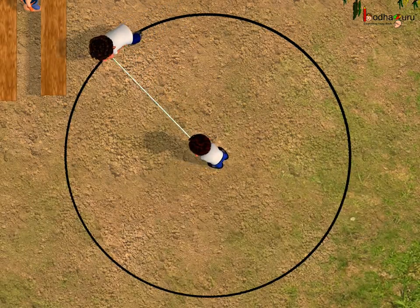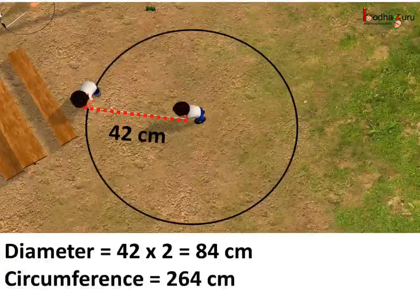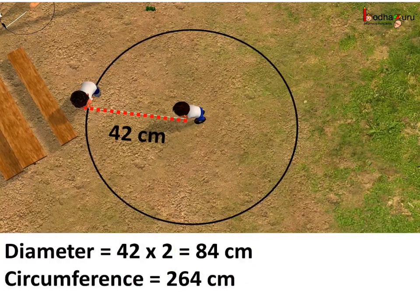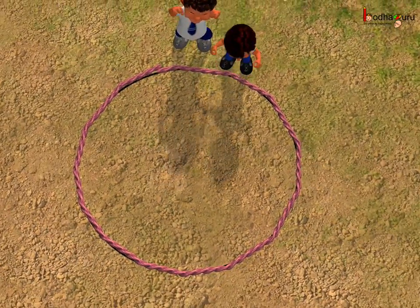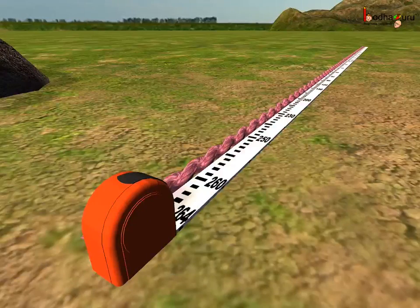Another team made an even bigger circle using a 42 cm long rope, and this was the radius of the circle. So the diameter of the circle would be 84 cm — that is, twice of 42. And when they measured the perimeter of the circle, that is the circumference of the circle, it came about 264 cm.